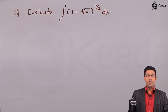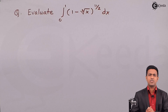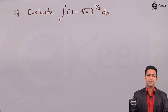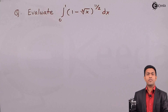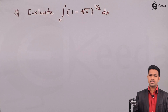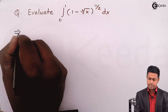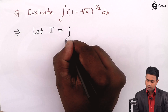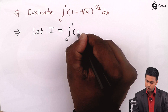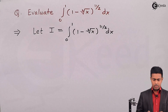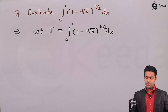Hello students. Here we are going to see a numerical which is based on the beta function, and we will be solving this numerical by using the definition of beta function. We have the integration from 0 to 1 of (1 minus the cube root of x) whole bracket raised to 11/2, dx, and we have to evaluate this integration. I'll consider this given integration as I and then we will solve it.